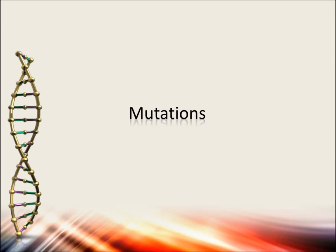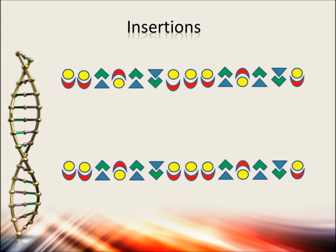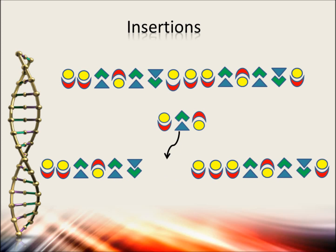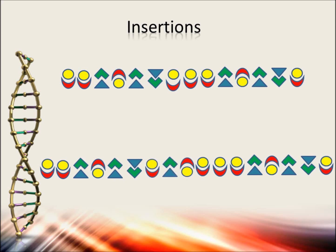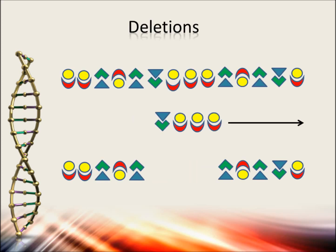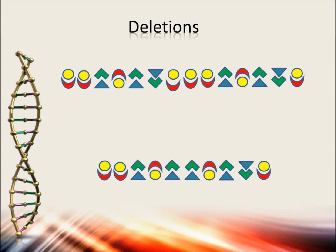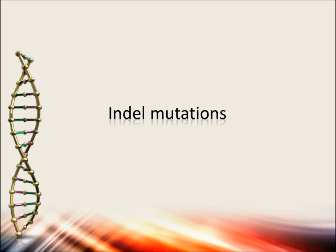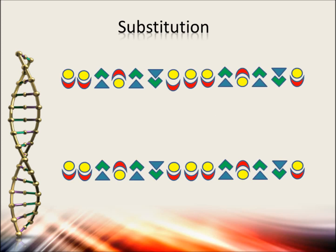Sometimes little changes occur, which are called mutations. There are different types of mutations. The first type is an insertion — a piece of DNA comes from somewhere and gets itself included within the DNA string. The second type is a deletion — a piece of DNA gets out of the genome and is deleted from the string. Insertions and deletions together are called indels. The last type of mutation is a substitution, where a piece of code gets itself replaced by another piece of code.